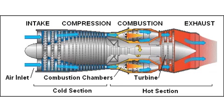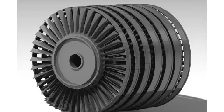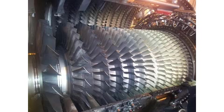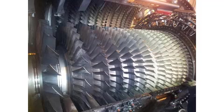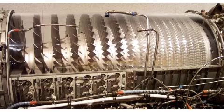Parts in jet engines. Compressor: The compressor is the first component of the engine. It has many blades and is attached to the main shaft. The compressor sucks and squeezes the air as it moves further, which results in very high pressure of air.